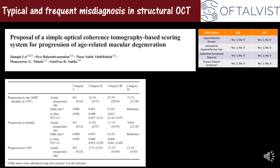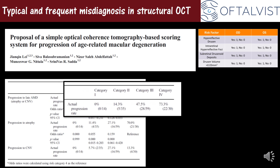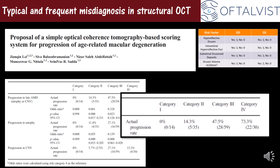Depending on the presence of hyperreflective drusen, intra-retinal hyperreflective foci, sub-retinal drusenoid deposits, and the drusen volume, they categorize four different stages or categories with extremely different risk for progression to advanced AMD.